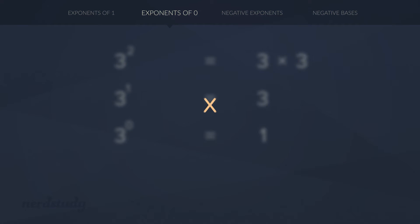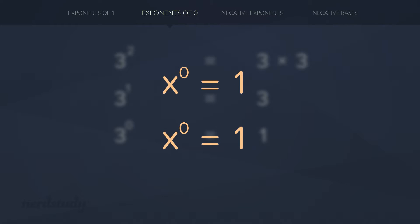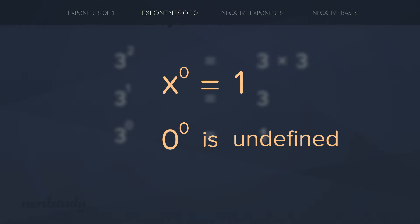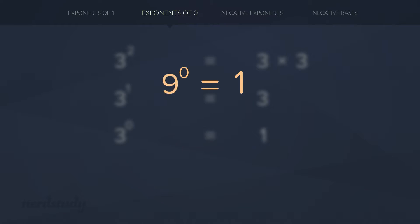To write this formally: x to the exponent 0 equals 1. However, there is one small exception: when x equals 0, we don't say that 0 to the exponent 0 equals 1. Instead, we say that 0 to the exponent 0 is undefined. We will cover this in another video. For now, it's simple to think of it like this: any number to the exponent 0 equals 1, with the exception of 0 to the exponent 0.